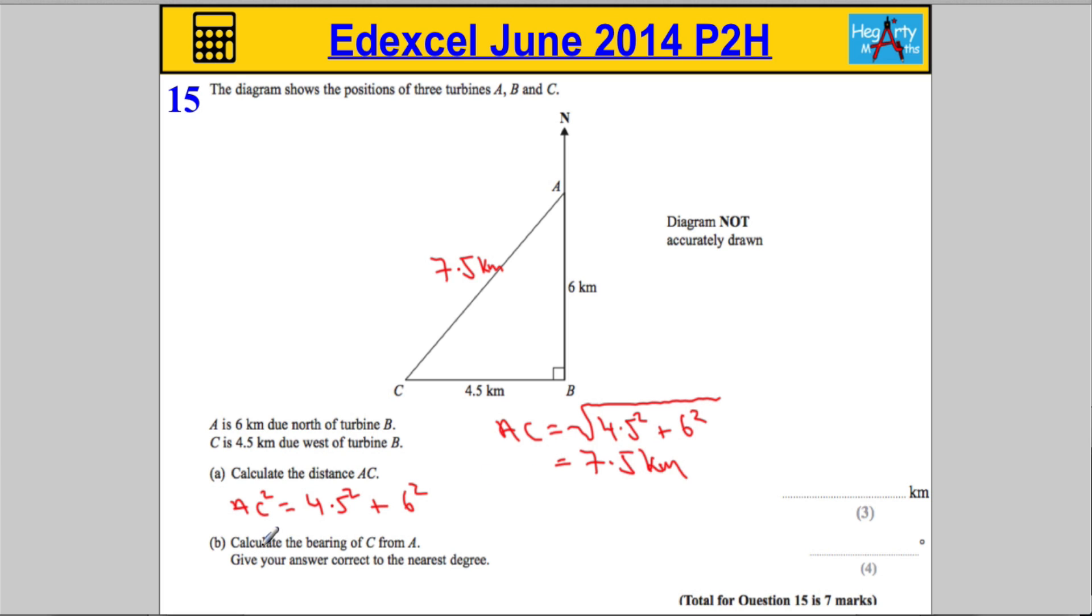OK, part B. Calculate the bearing of C from A. Now, be incredibly careful here. A lot of students will mix up what this is actually asking me to do. A bearing is an angle, and we want the bearing of C from A. So, I'm actually measuring from A.